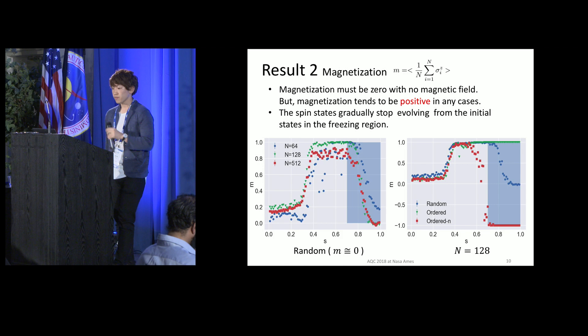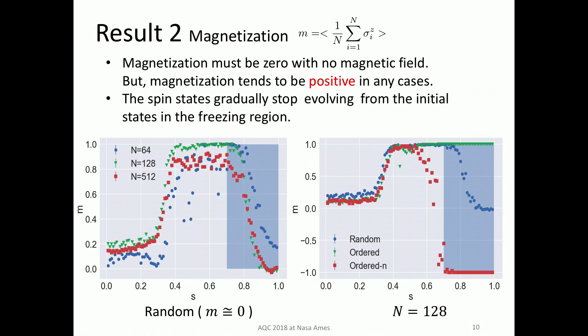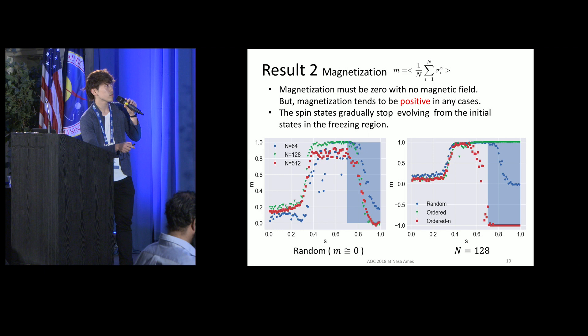This is the result of the magnetization. The left figure shows the result of the random initial value. We performed three kinds of number of spins. The average magnetization gets close to M equal 1 from M equal 0 as the annealing parameter S increases. We can see the finite-size effects. Curiously, even though we don't add any magnetic field, the average magnetization tends to be positive. So the real machine has a little positive bias with no magnetic field. Also, we can see the magnetization decreases in this region — this is a freezing region where the spin state stops evolving.